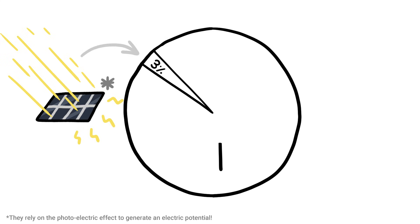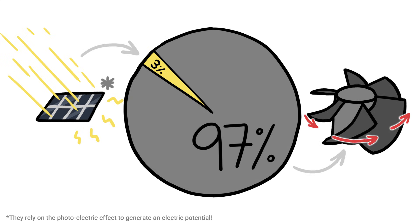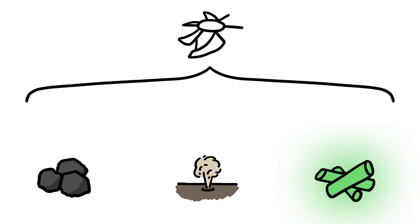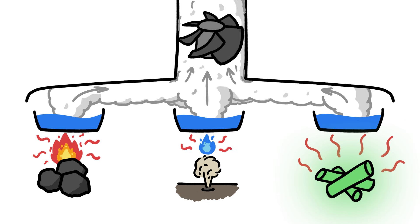Aside from solar panels, pretty much all our electricity comes from spinning turbines. Wind turbines and water turbines are the most obvious, but even our coal, gas, and nuclear power plants use turbines. The fuel is just there to heat water into steam that can flow and spin a turbine.